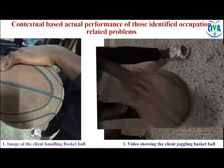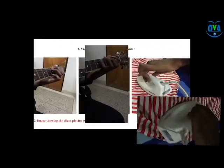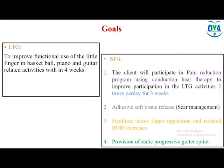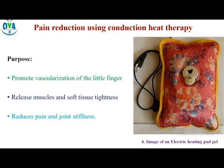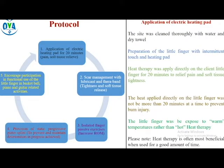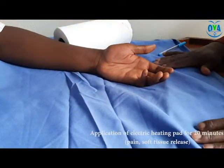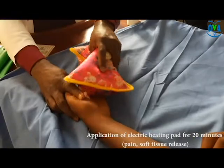The intervention program was designed to address short-term goals with the aim of achieving long-term goals. Interventions begin with pain reduction techniques using conduction heat therapy as an adjunct to occupational therapy practice, followed by scar massage, restrictive active range of motion exercises, restrictive range of motion exercises using theraband, and passive active soft tissue lengthening.